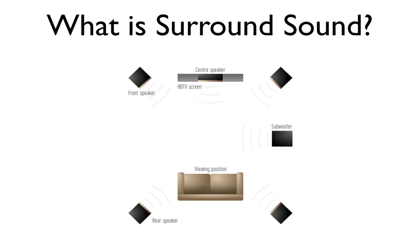So what is surround sound? The most common type of surround sound will actually use six discrete channels of audio — five full-range channels, and one channel which is limited to the low frequencies of the subwoofer. The end result is called 5.1 surround sound.